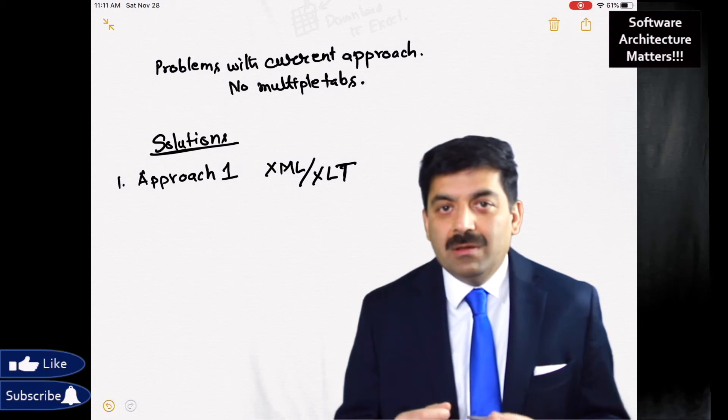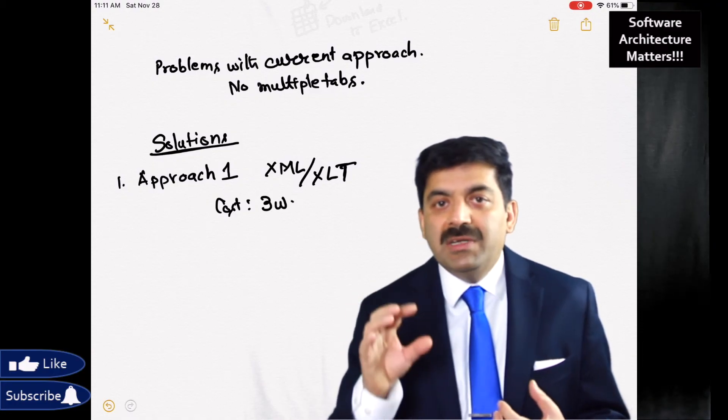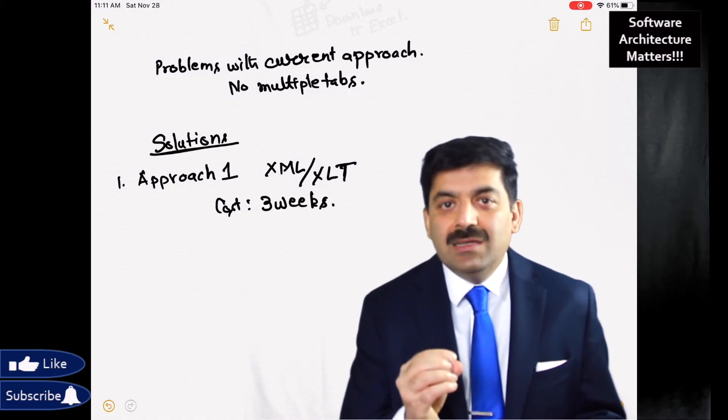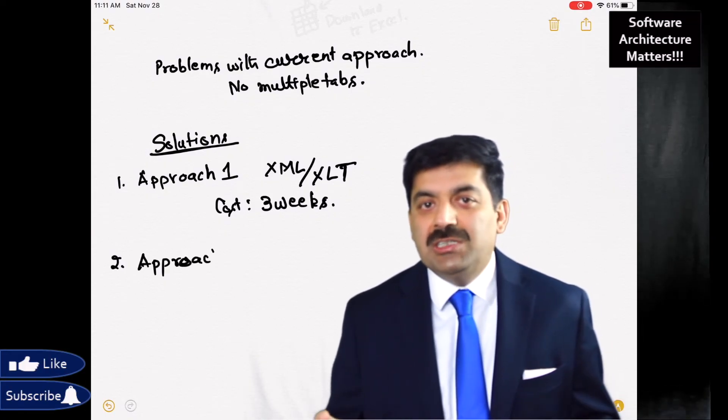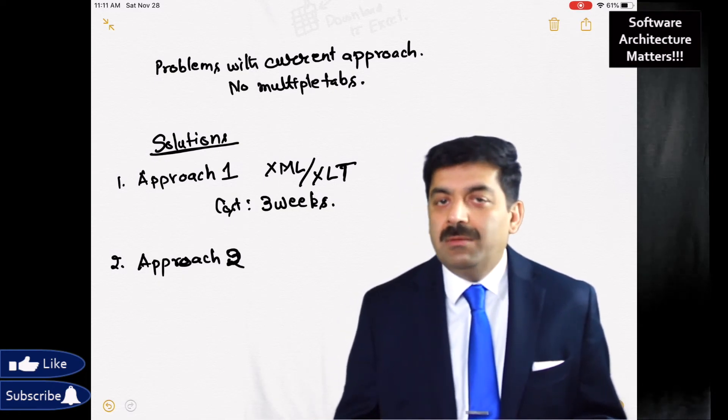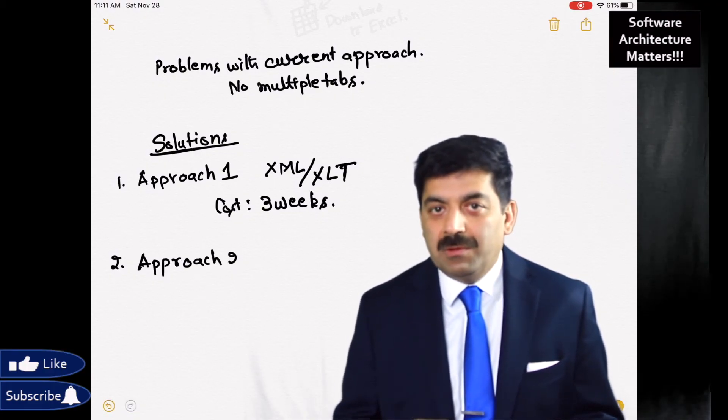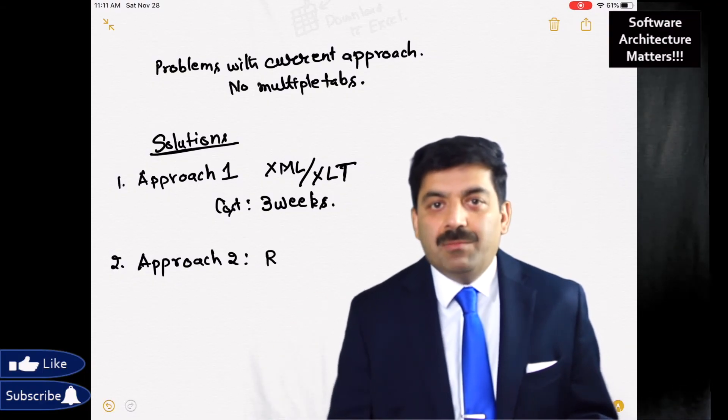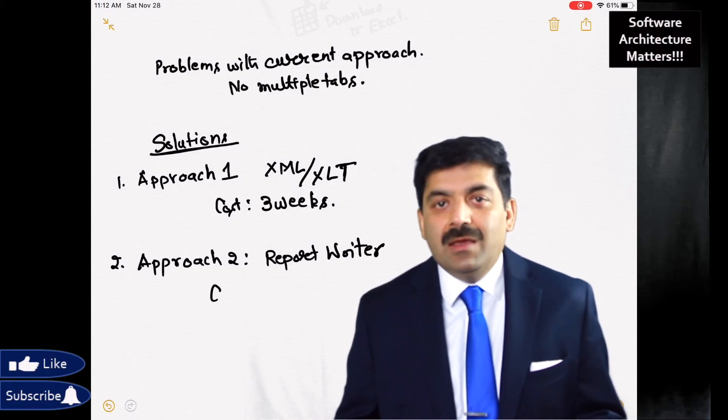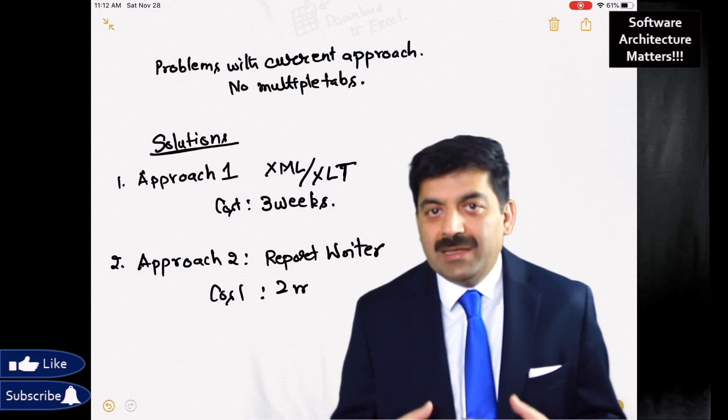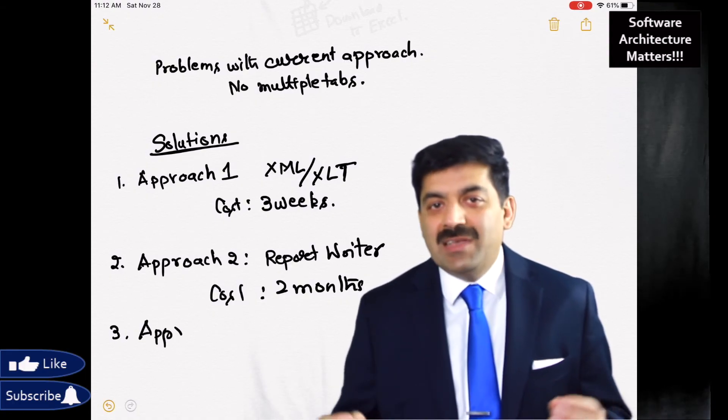And then there was another approach. That time, Excel could understand HTML. So if you could emit HTML from your web pages to Excel, it would understand and generate an Excel sheet with multiple tabs. So this approach didn't require that much effort. All you have to do is write some common function which takes HTML and passes to this Excel download writer and generates the Excel for you. And it took only one week. And all of us agreed on this approach.